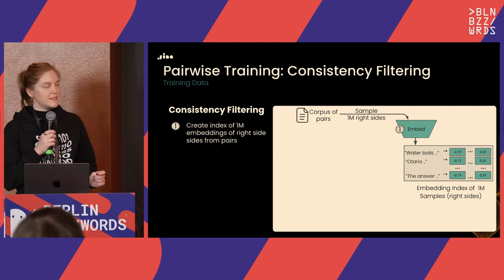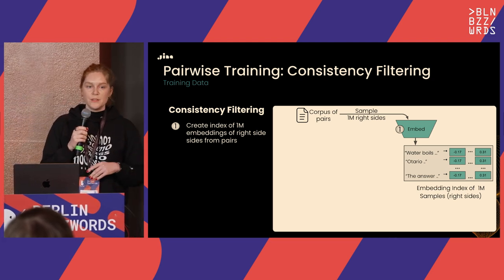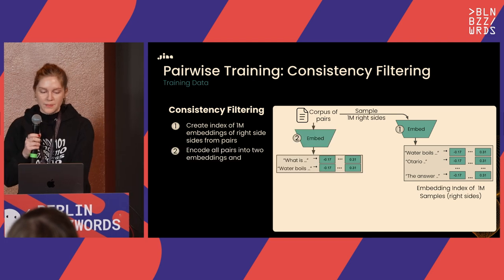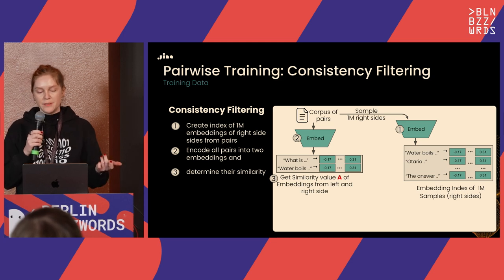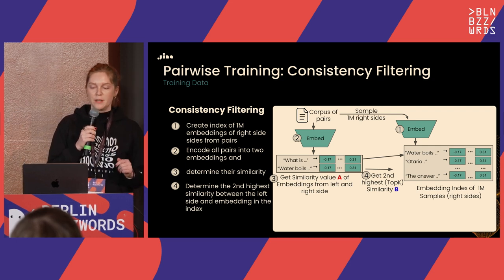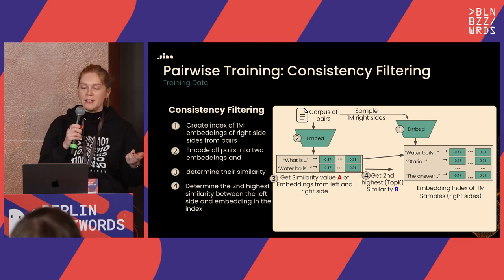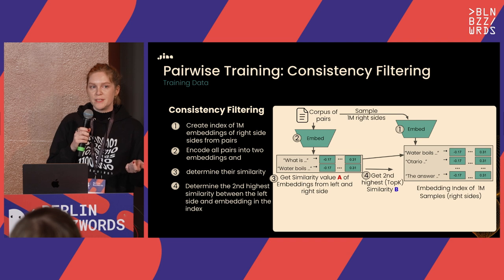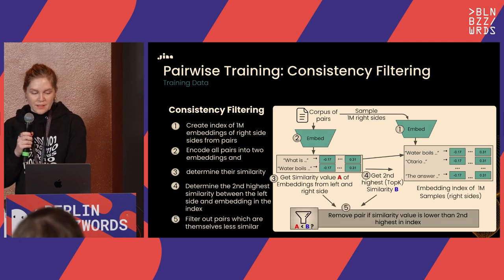Consistency filtering works as follows: we create an index of about one million embeddings from the right side of the pairs — all the descriptions, answers, or responses. We encode all pairs into embeddings, determine the similarity of each pair, then retrieve the second-highest similarity document from the index. We compare that retrieved document's similarity to the anchor query — if it's higher than the original pair's similarity, the pair is probably garbage and we discard it.